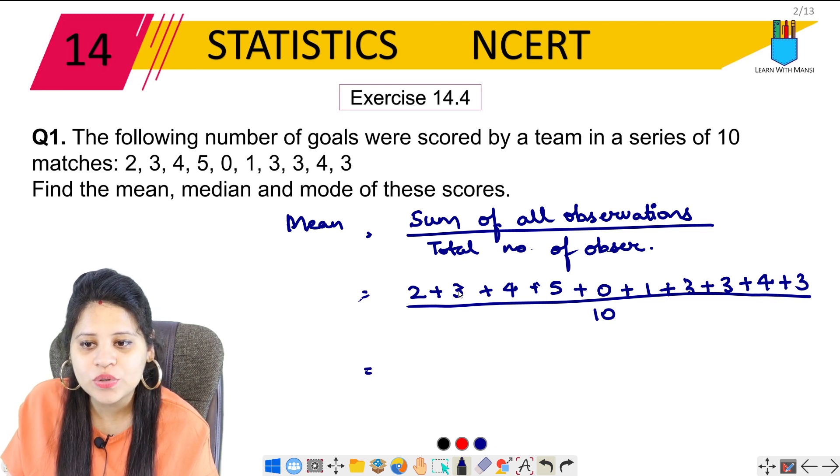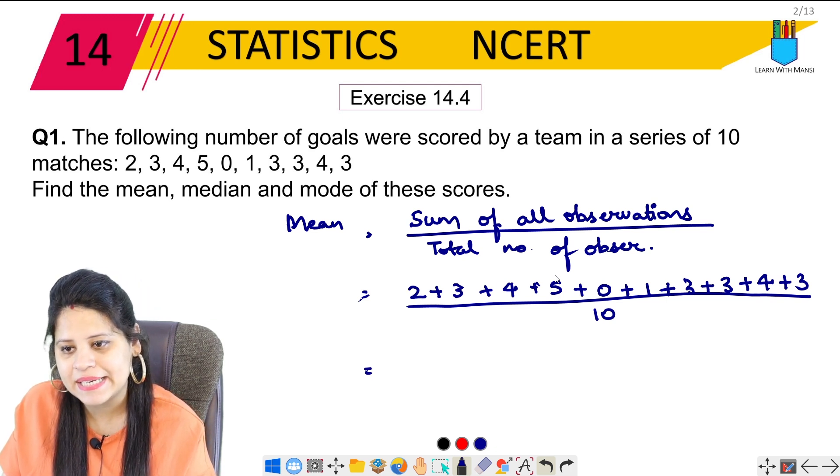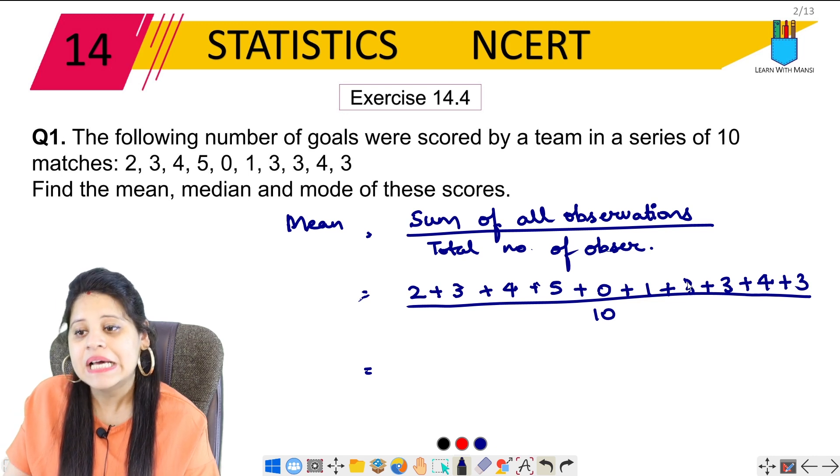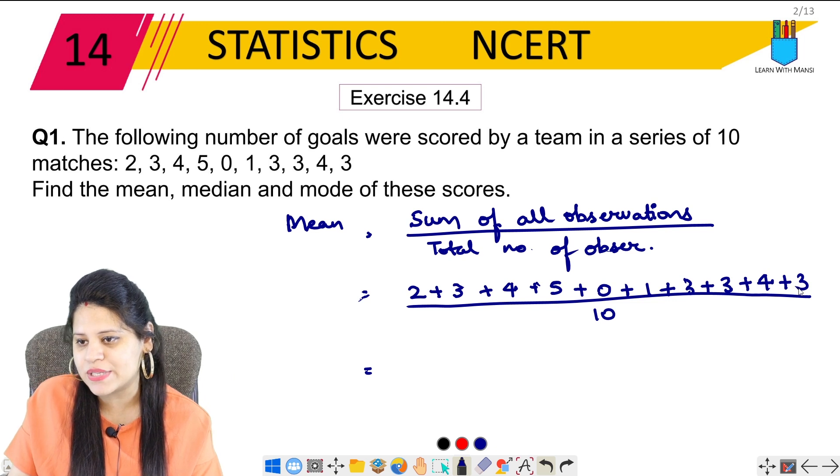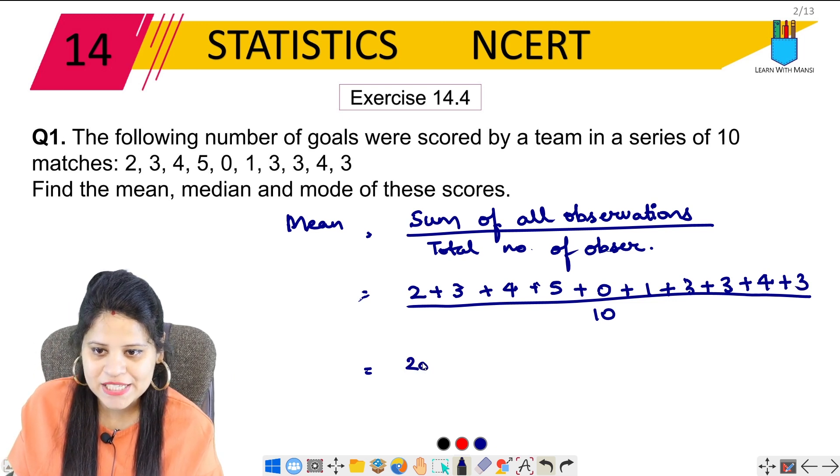Now we have to add 2, 3, 4, 5, 6, 7, 8, 9, 10, 11, 12, 13, 14, 15, 16, 17, 18, 19, 20, 21, 22, 23, 24, 25, 26, 27, 28. So this is 28 upon 10.